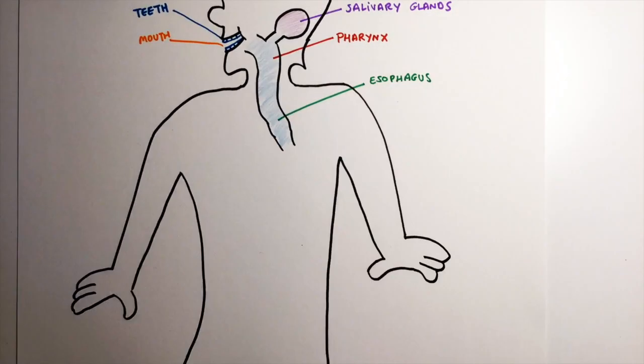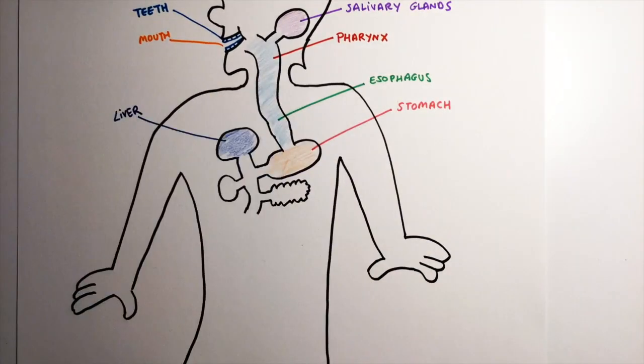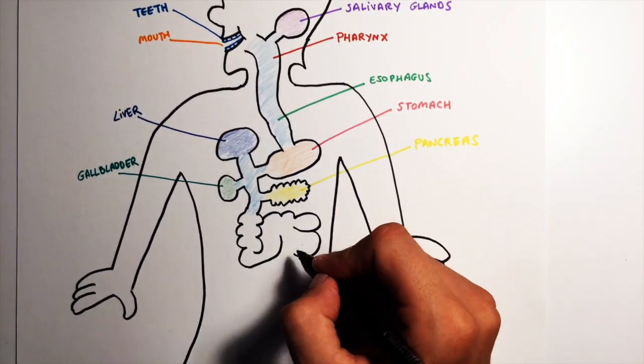the esophagus, the stomach, the liver, the gallbladder, and the pancreas.